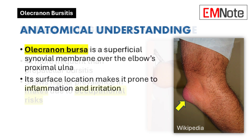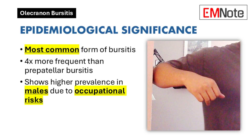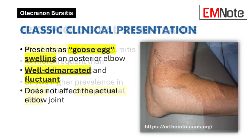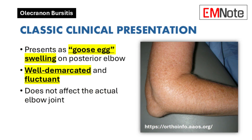Epidemiological Significance: Olecranon bursitis stands as the most common form of bursitis, occurring approximately four times more frequently than prepatellar bursitis. The condition shows a marked male predominance, likely due to occupational and activity-related risk factors.